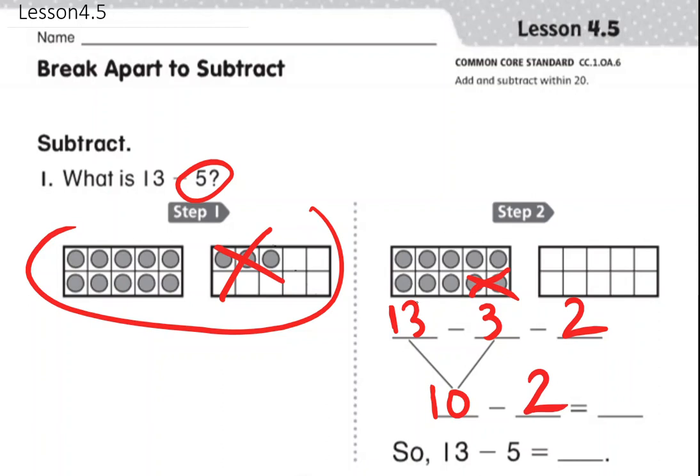Now if you look inside of the first 10 frame, there are 1, 2, 3, 4, 5, 6, 7, 8 circles left.